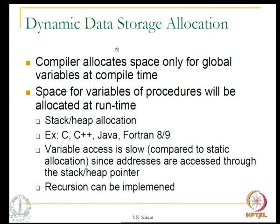In dynamic data storage allocation, the compiler allocates space only for global variables at compile time; it does not allocate space for procedure variables — they will all be allocated only at runtime. This implies that either a stack or heap is necessary. Languages which use dynamic storage allocation are C, C++, Java, Fortran 90, etc. The access to variables is a bit slower compared to static allocation because addresses are now accessed through a stack or heap pointer. The biggest advantage is that recursion can be implemented.